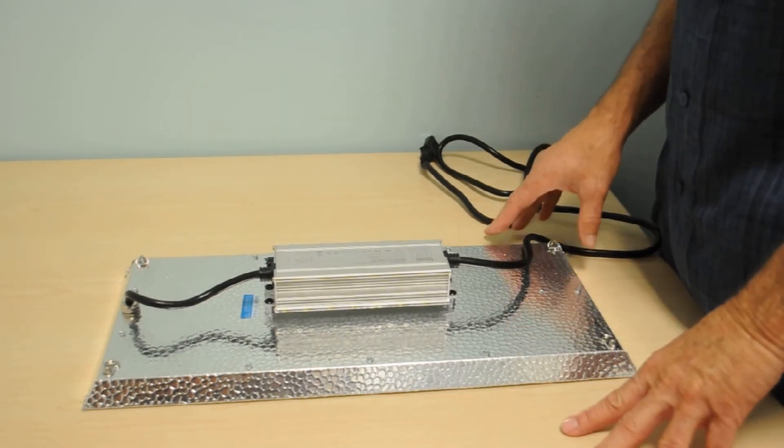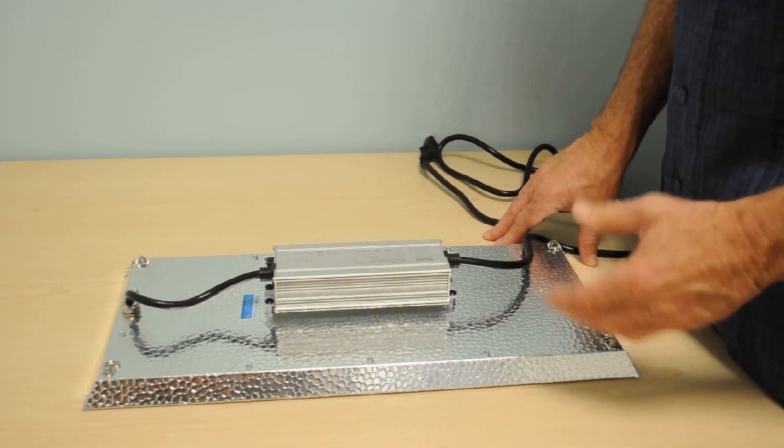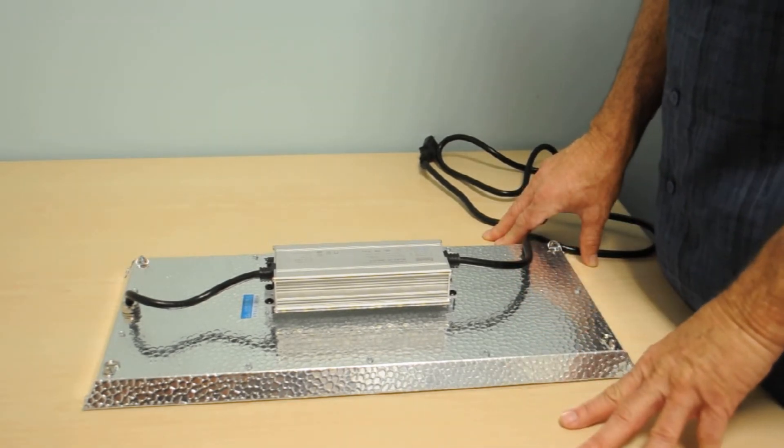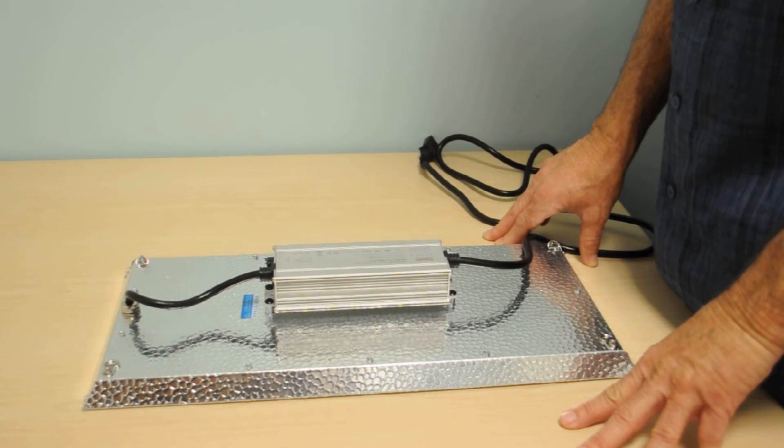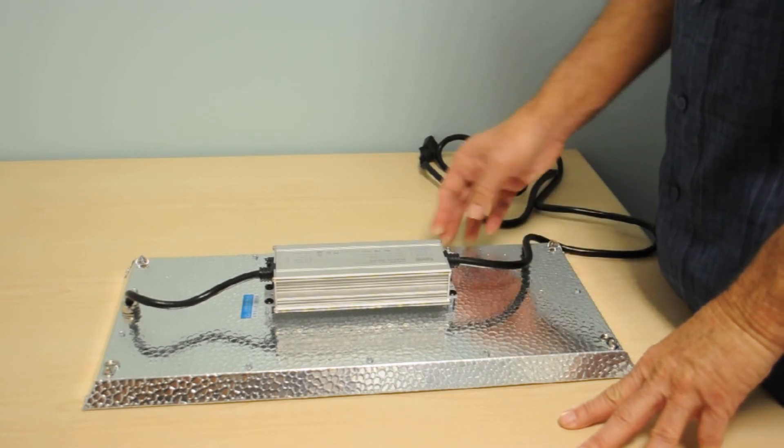The dimmer switch would be nice, but we really are concerned about the lack of an on and off switch. Growers are going to plug the lights into timers anyway, so an on-off switch really isn't even necessary. But I am anxious to see how this light performs. We're going to put it into the LED Info test chamber and see what kind of PPFD numbers this one comes up with.